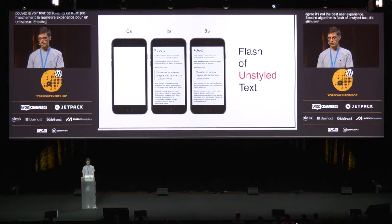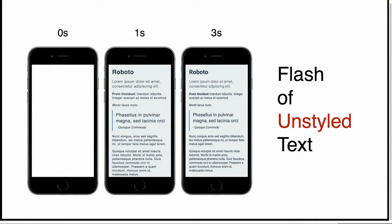The second algorithm is a flash of unstyled text. It's still used by some browsers. The idea is that the browser uses a local fallback font while the custom font is loading. In that case, the user can see content immediately. But when the custom font loads, it will replace the fallback font, and it's very noticeable. Since different fonts have different symbol sizes, the whole layout will be changed. So if you already started to read the content, you will lose focus — and it's very annoying.